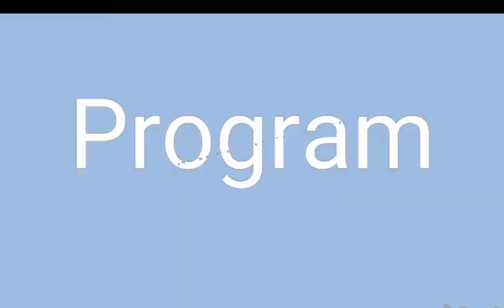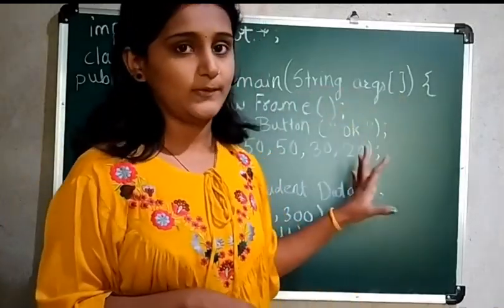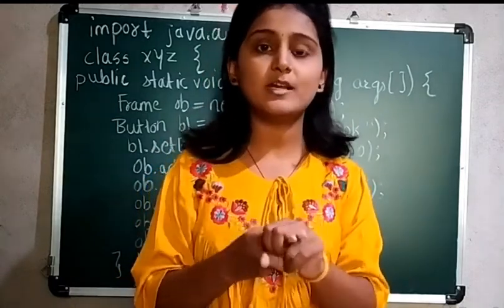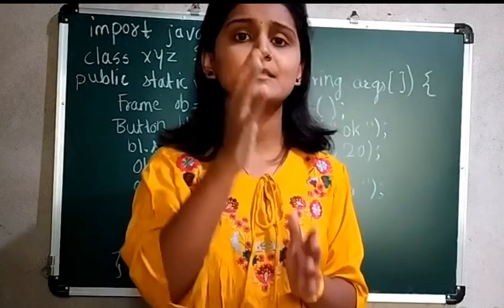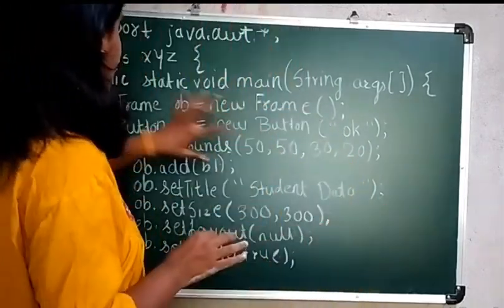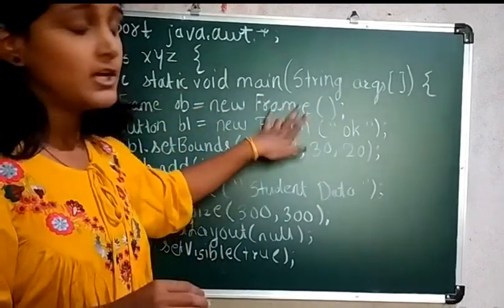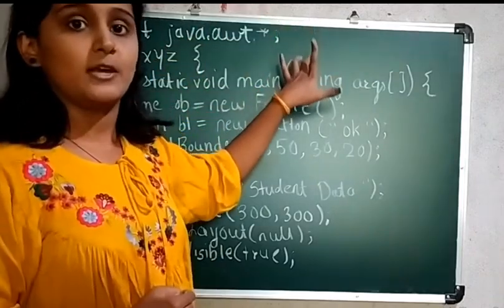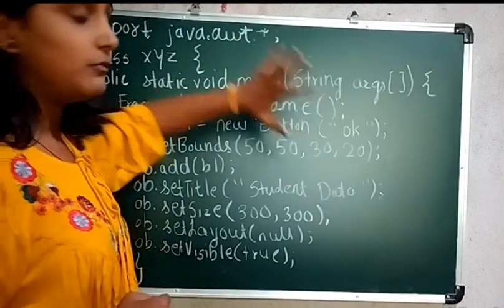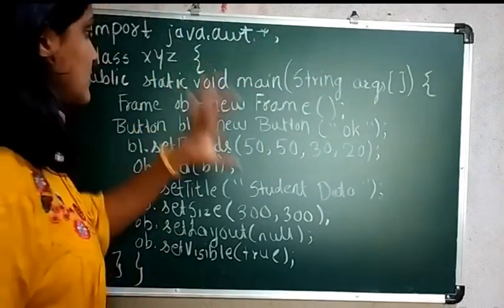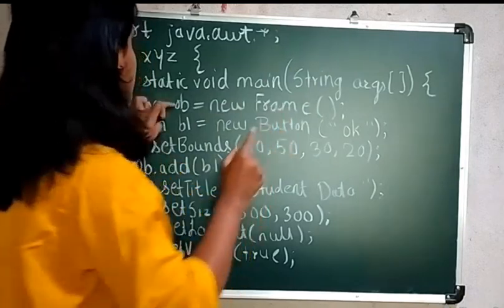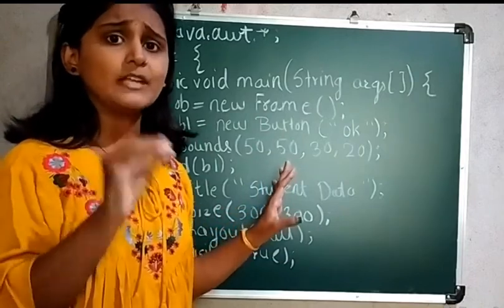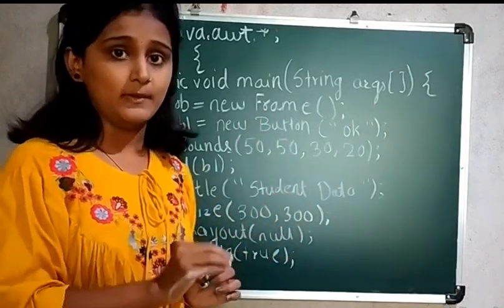Now we will turn towards the program. The program in advanced Java can be done in two ways: first by using inheritance, and second by using association. With inheritance, you write 'class XYZ extends Frame' so the properties of Frame are extended into the class. With association, you create a Frame object and using that object you add components one by one.